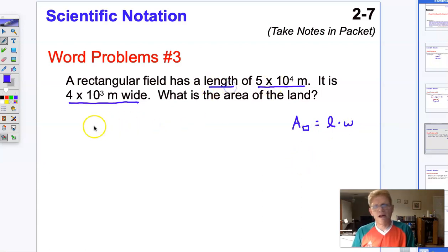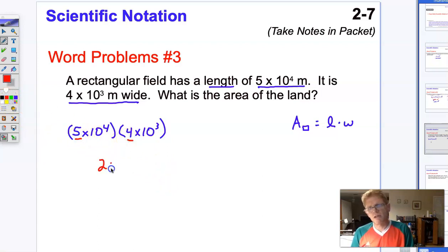We've been told that our length is 5 × 10⁴ and our width is 4 × 10³. Simple scientific notation multiplication. I'm going to multiply my 5 and my 4, which gives me 20. Then I'm going to multiply my exponents, which gives me 10⁴⁺³. That's going to give me 20 × 10⁷.